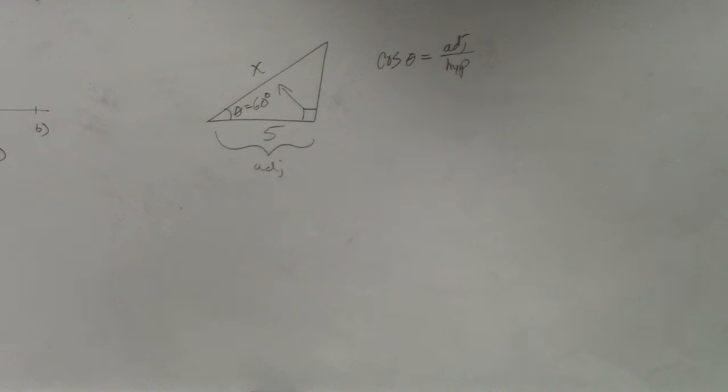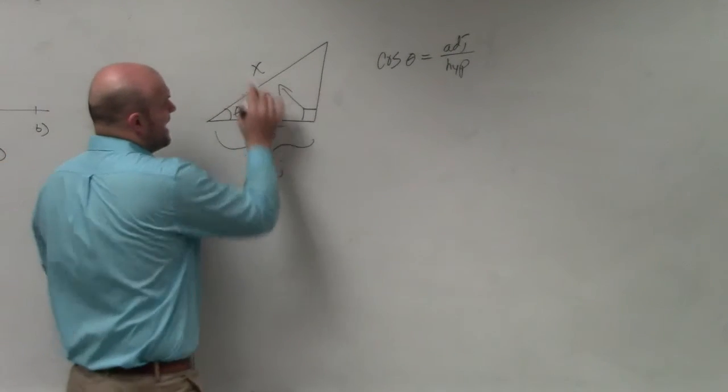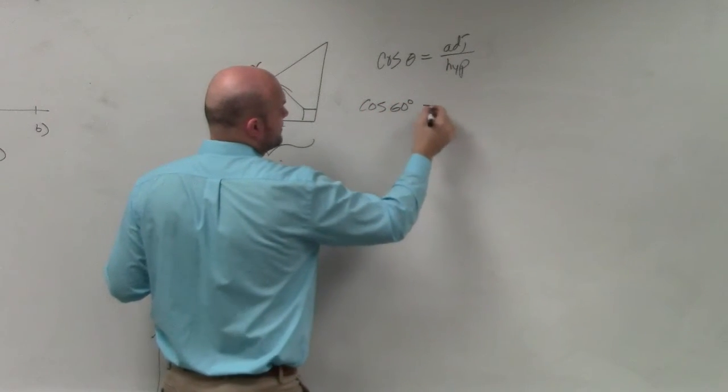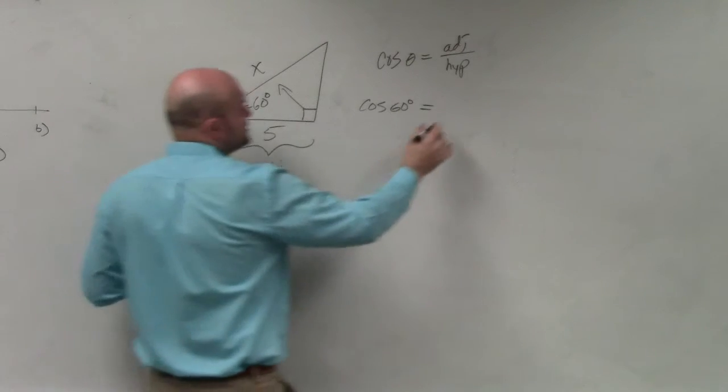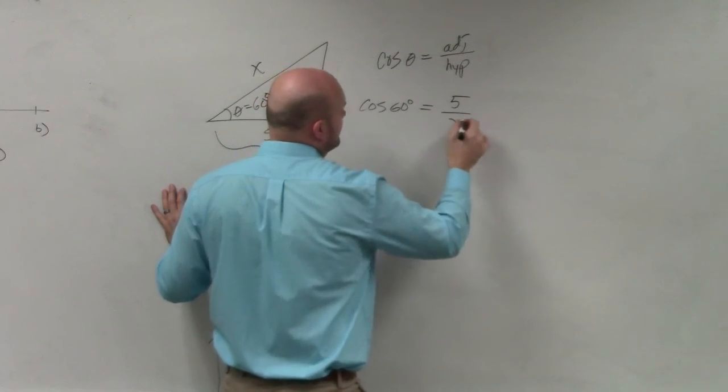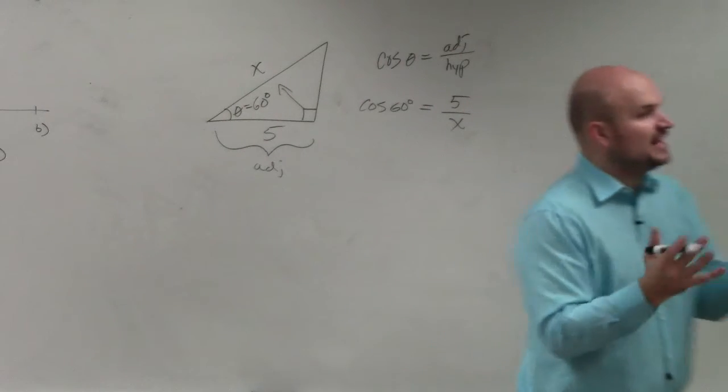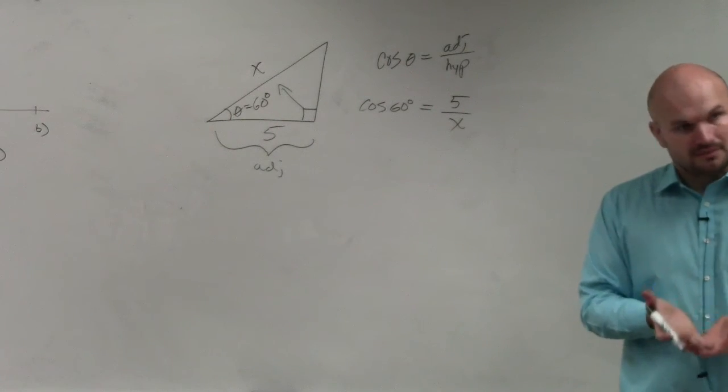I can use this trigonometric ratio to now help me because I now have an angle, cosine of 60 degrees, equal to the adjacent side over the hypotenuse. Do I now have an equation that I could solve for x? Yes, absolutely.